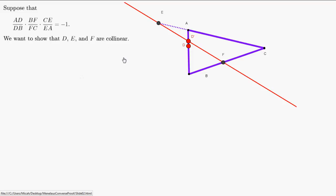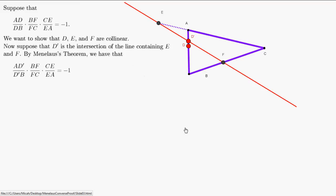We're going to use Menelaus' Theorem itself, which is a neat trick. Suppose that D isn't necessarily on line EF. There is certainly some point D' on that line which intersects line AB. We let D' be that intersection point.